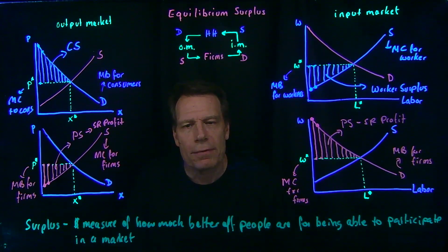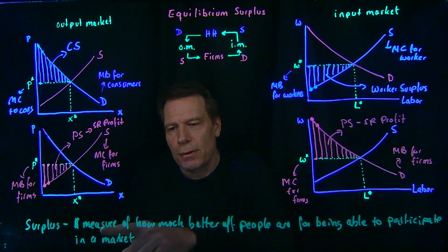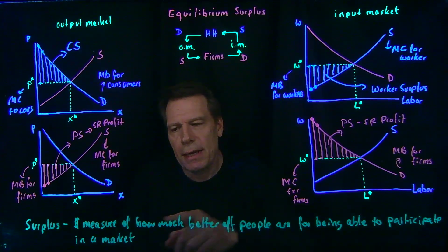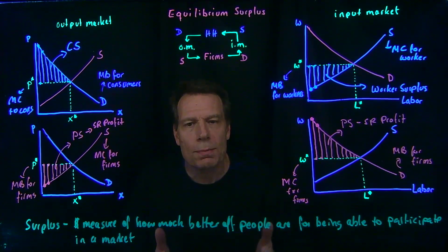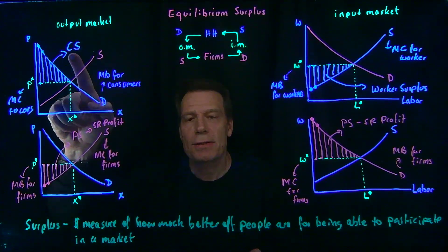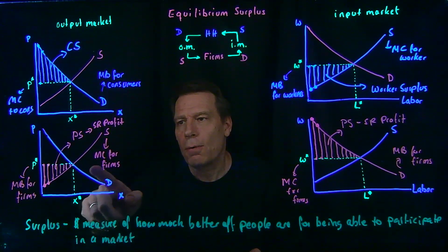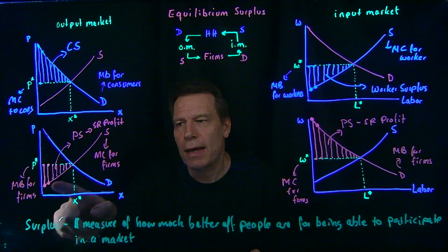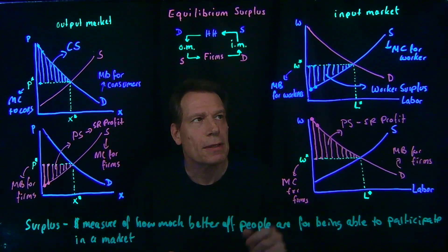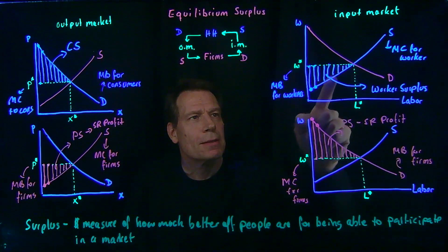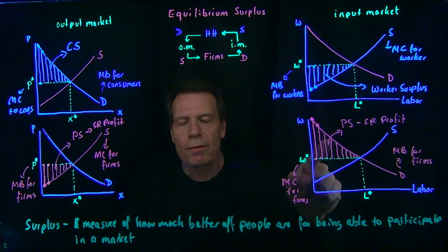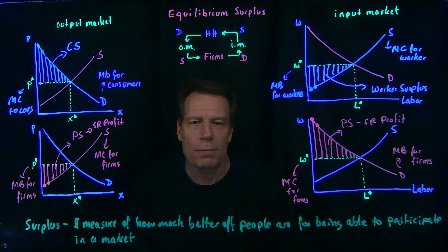So now we have dollar measures of how much better off people are for being able to participate in the market. For households in output markets, that gives rise to consumer surplus. For firms in output markets, that gives rise to the producer surplus triangle, which equals short-run profit. In labor markets, we get worker surplus and short-run profit or producer surplus for firms.